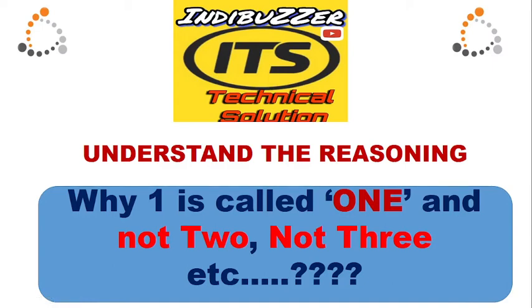Hello and welcome, everyone. Today we are going to learn about one interesting topic. In this learning session, we are going to understand an important piece of reasoning and logic — why we name numbers in different ways. Like, why do we call one as 'one' only, and not two, three, or four? We've all been studying from childhood and never thought about why these things are written the way they are.